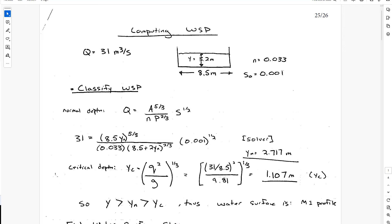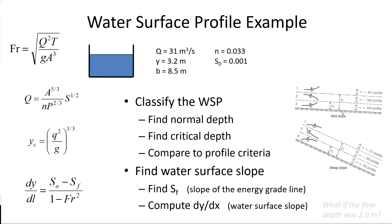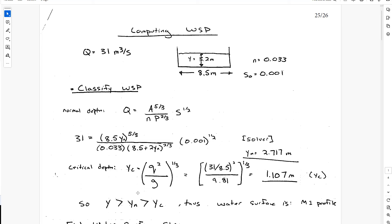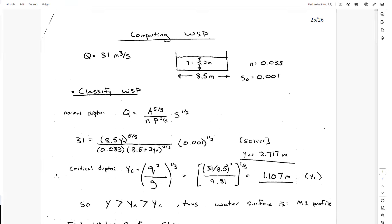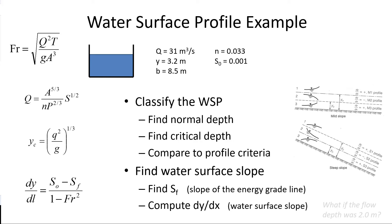Looking at the diagrams: a mild slope is when normal depth is greater than critical depth — that's what makes it mild. If critical depth were more than normal depth, that would indicate a steep slope. Here our actual flow depth is above both, putting it in zone 1. So M1 profile: normal depth greater than critical makes it M, and the given flow depth of 3.2 meters is greater than either, meaning zone 1. That's the first part — we've found the normal depth, critical depth, compared them, and classified the water surface profile.